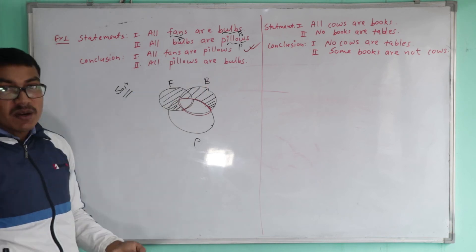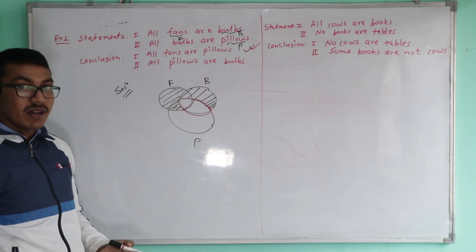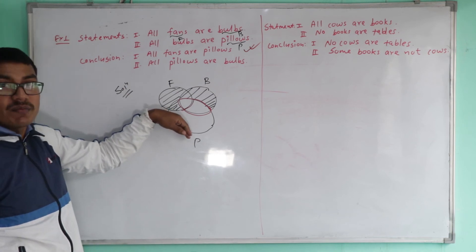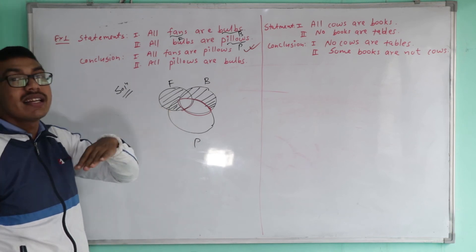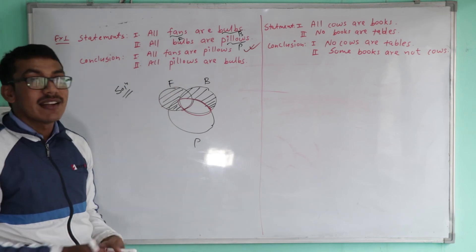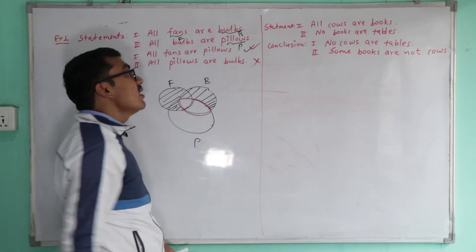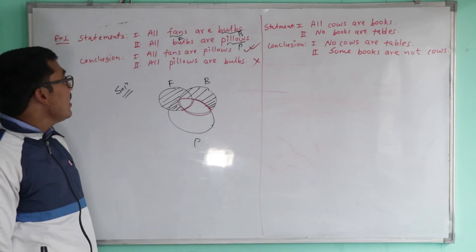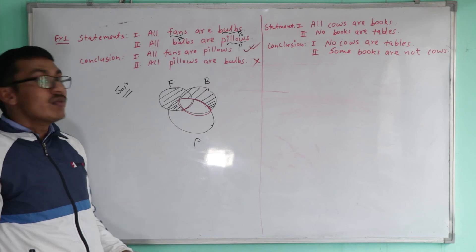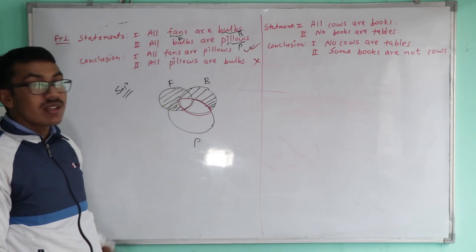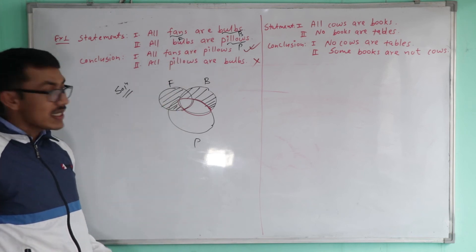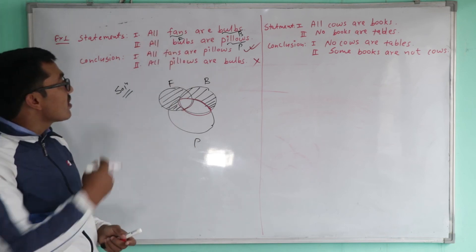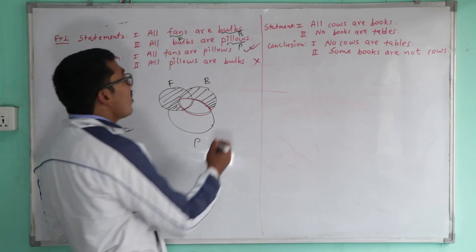All pillows are balls. After studying this using the Venn diagram, the first conclusion is confirmed right. Only conclusion I is true. This is the logical deduction and this is the solution.